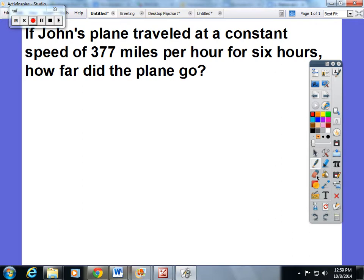If John's plane traveled at a constant speed of 377 miles per hour for six hours, how far did the plane go? The students were introduced to the formula: distance equals rate times time.